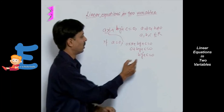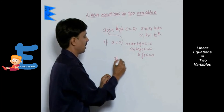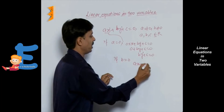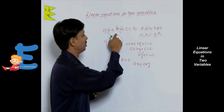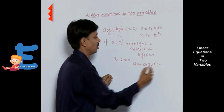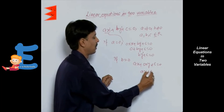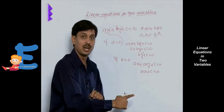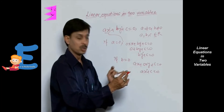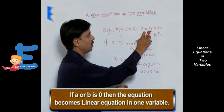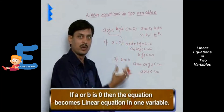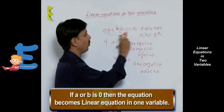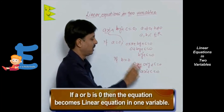Now, B is not equal to 0. If B equals 0, then it will be AX plus 0 times Y plus C equals 0. This becomes AX plus C equals 0. This is also a linear equation, but a linear equation in how many variables? In one variable. So if A is 0, this linear equation in two variables converts to a linear equation in one variable. If B is 0, the linear equation in two variables also converts to a linear equation in one variable.